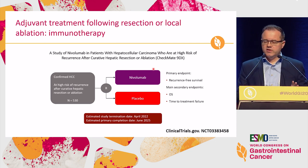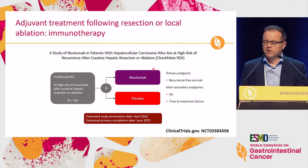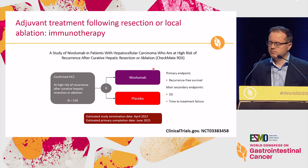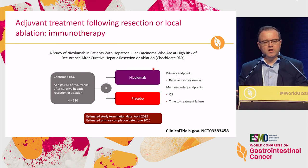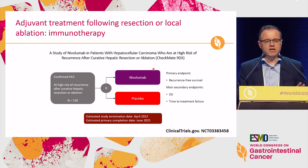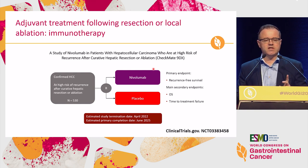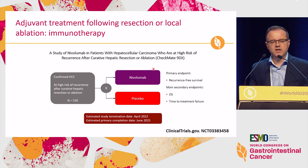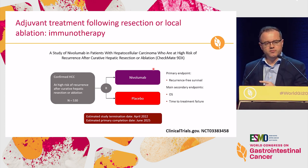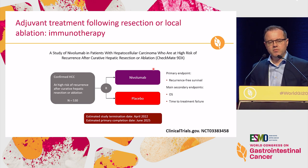We know there is no benefit for sorafenib following resection or local ablation — a well-conducted study with good patient identification and stratification that was completely negative. There is now interest, and studies have started, for both nivolumab and pembrolizumab to explore adjuvant immunotherapy in this field. However, in mouse models of NASH and HCC, giving immunotherapy can lead to even faster recurrence. This has been presented at ESMO, so we have to be very careful when using immunotherapy in the adjuvant setting in liver disease. These trials are very important and the results may be quite unexpected.